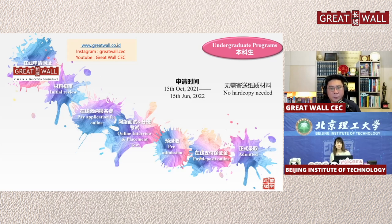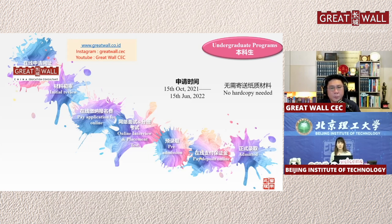After the interview, we will notify you of the results within around two weeks — which program you are admitted to and how much scholarship you received. After being pre-admitted, you will be arranged a placement test. Within two weeks you need to decide whether to accept the offer. To confirm your spot, you pay a deposit of half of the first year's tuition fee. We will then keep your position until September, and send the electronic admission letter around July.